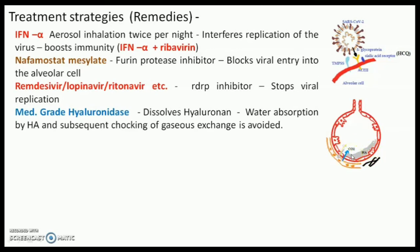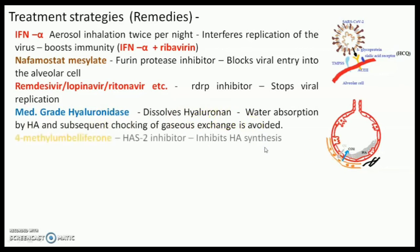The acute syndrome can be decreased to a greater extent. This can be done by using a medical-grade hyaluronidase enzyme, which can dissolve this hyaluronic acid, thereby decreasing the acute syndrome. There is another drug which inhibits the synthesis of hyaluronic acid by blocking the enzyme HAS2, which is hyaluronic acid synthase 2.